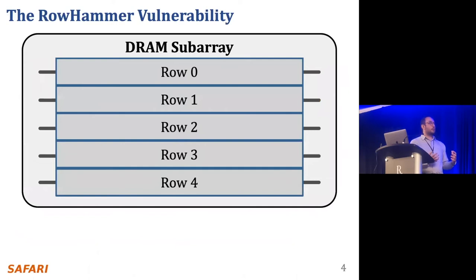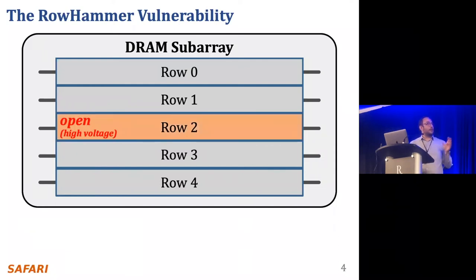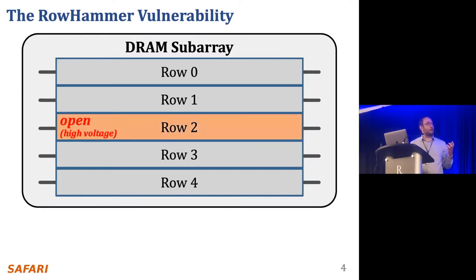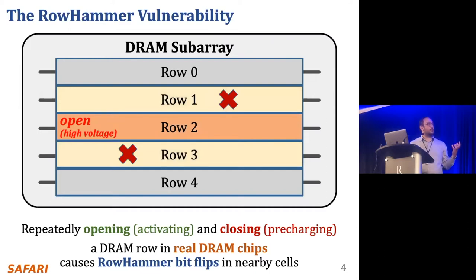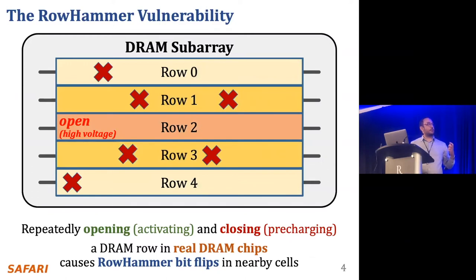I'll talk briefly about the rowhammer vulnerability. It's an inherent problem of DRAM technology today and it's getting worse. In this picture of a sub-array, if we access a row by applying high voltage to the wordline and then close it to access another row, and if we do this activation and pre-charge very frequently, we see bit flips in physically adjacent rows. This is not supposed to happen. It breaks memory isolation because you can have another process's data in those neighbor rows, making it a very critical vulnerability.